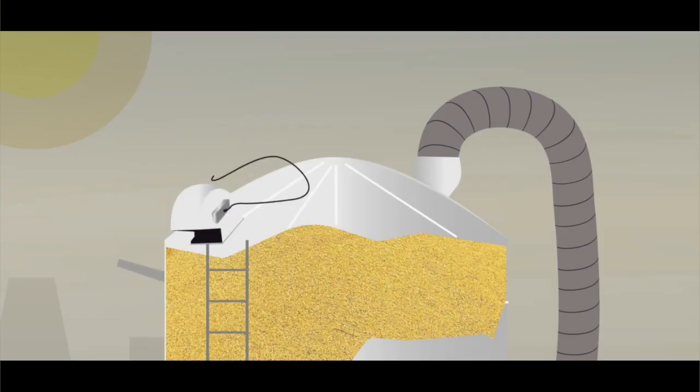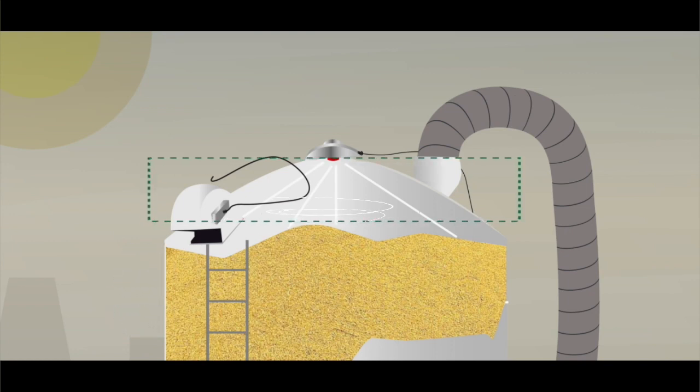With a humidity sensor on the exhaust air and temperature sensor on the roof of the silo, we can control the relative humidity and ensure that the dew point inside the silo never rises to the temperature of the silo roof.